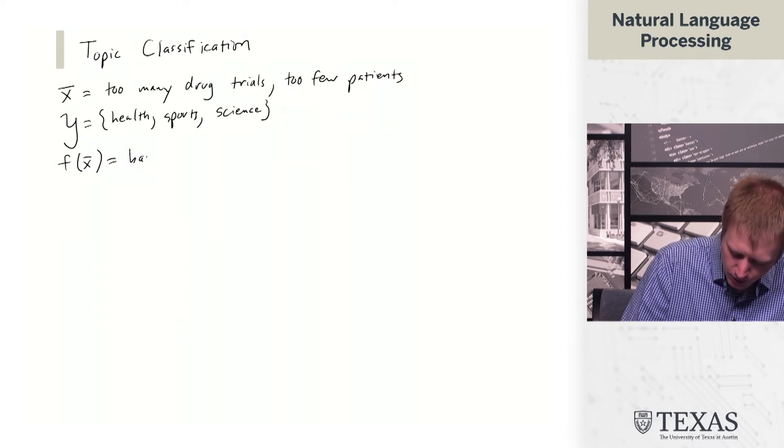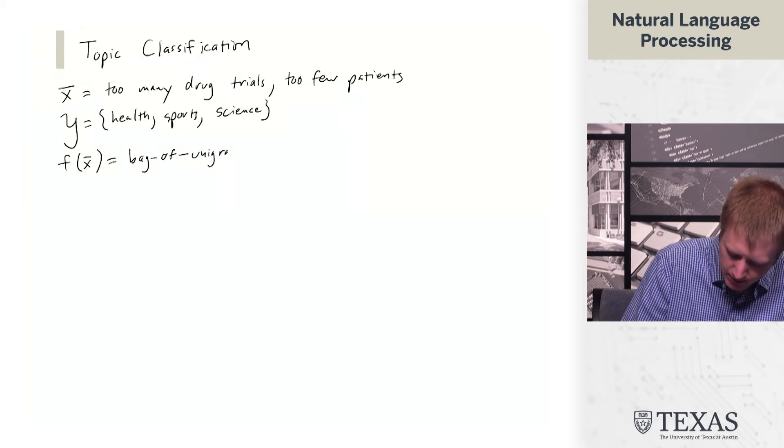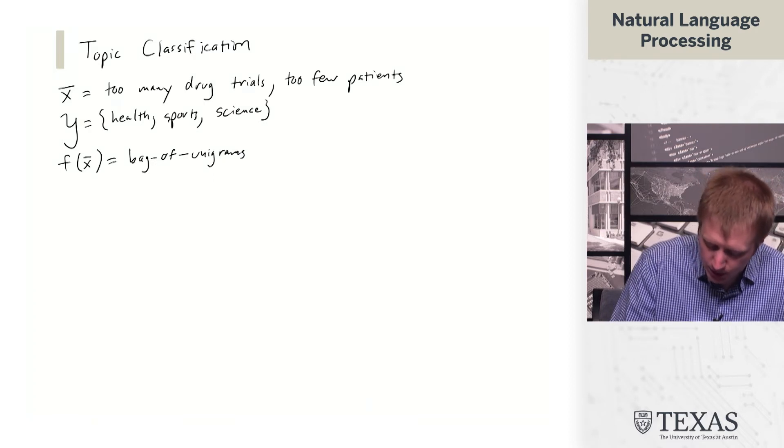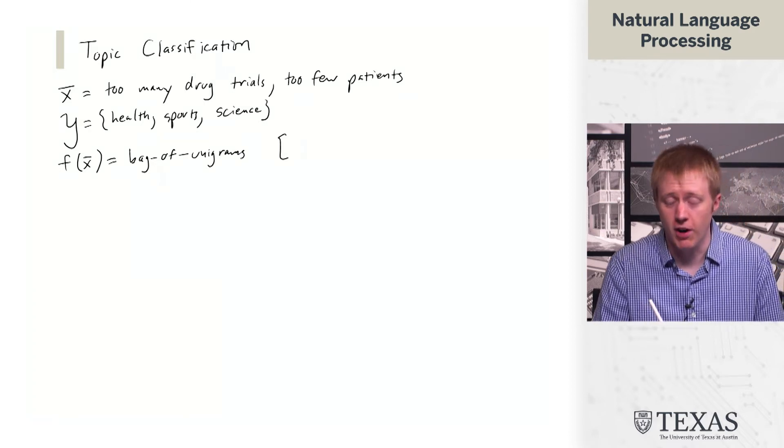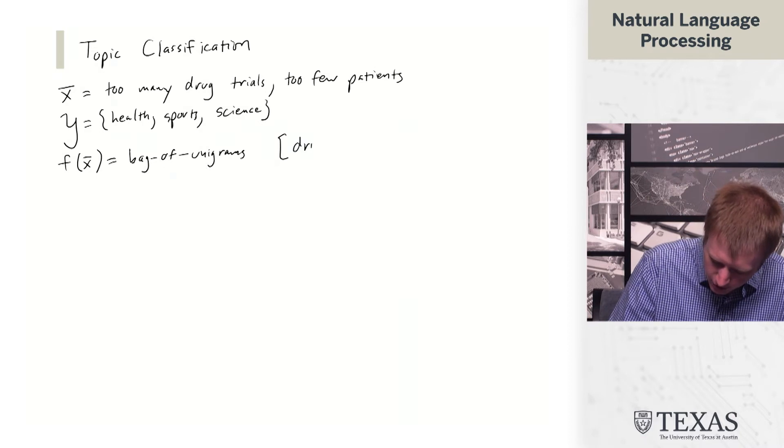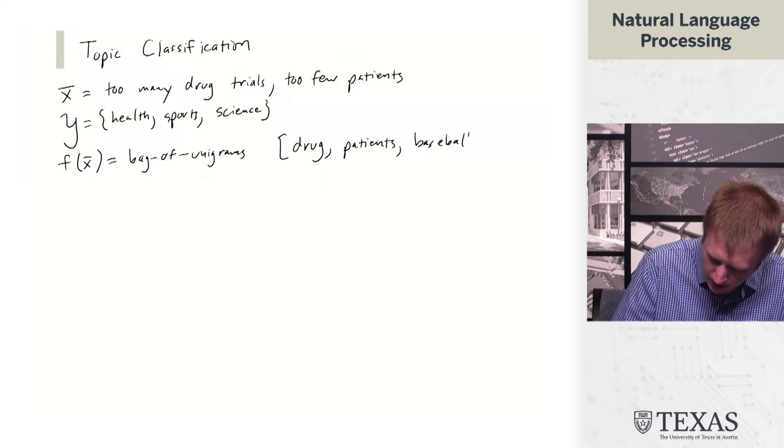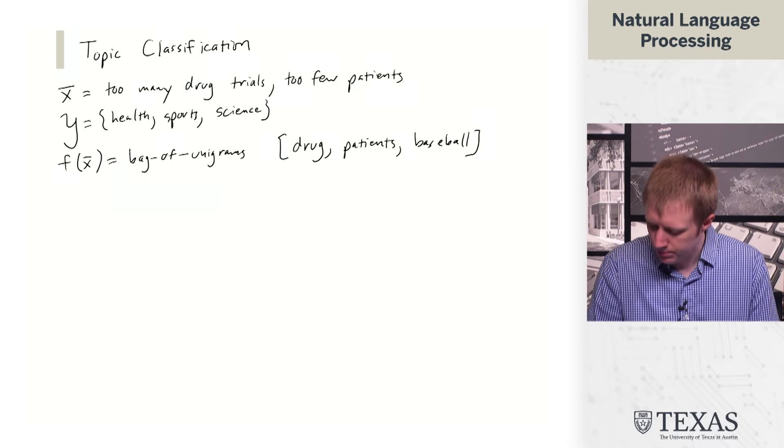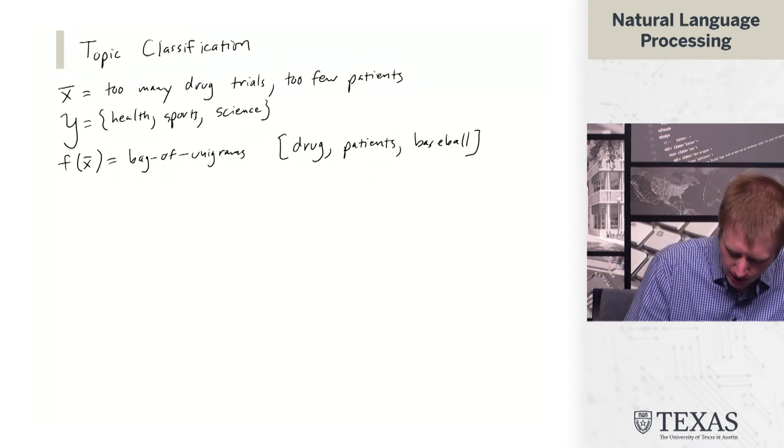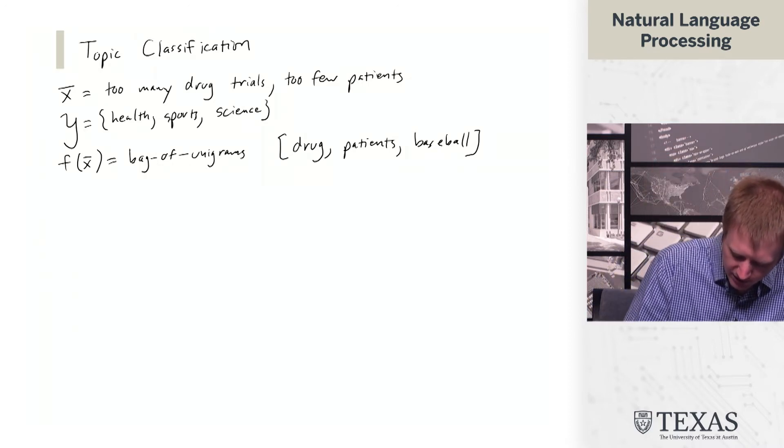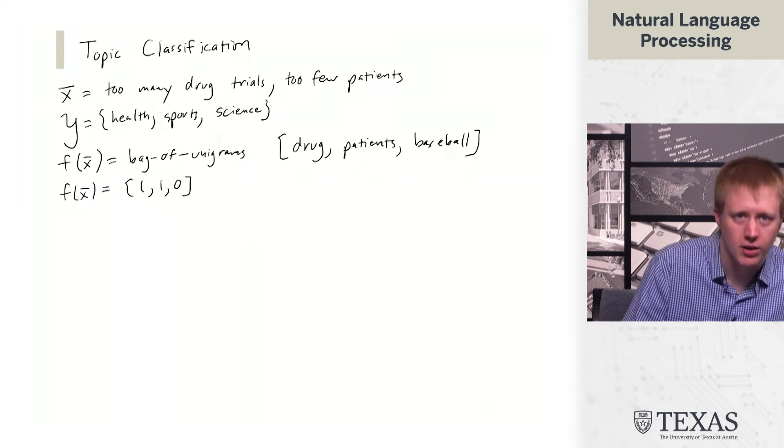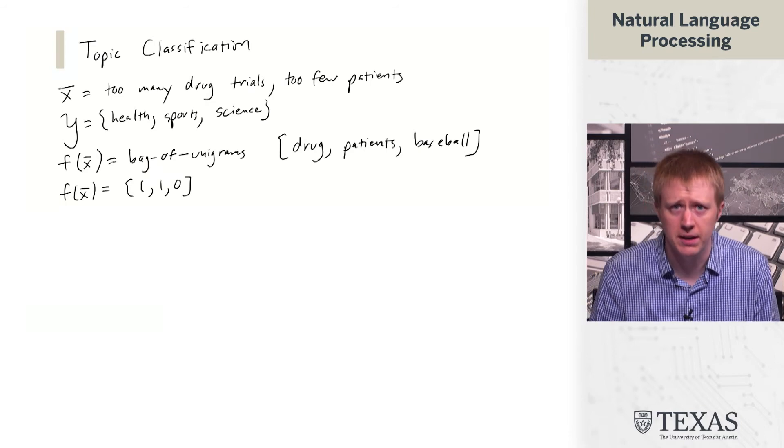f(x) is going to be bag of words, let's say bag of unigrams. We are only going to look at the following unigrams: drug, patients, and baseball. You should be able to convince yourself that f(x) for this example is (1,1,0). We have drug and patients there, but not baseball.